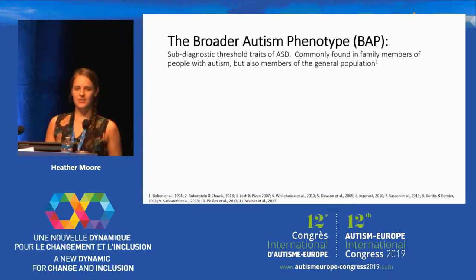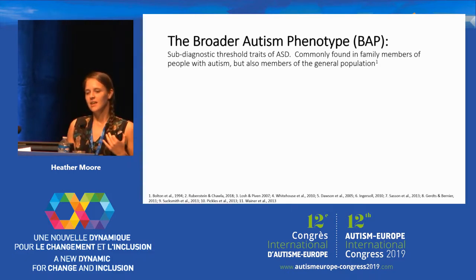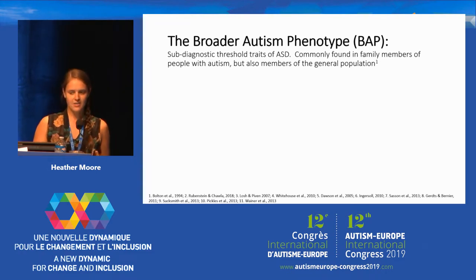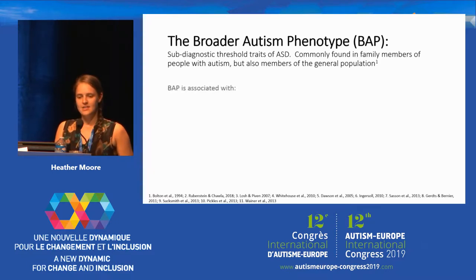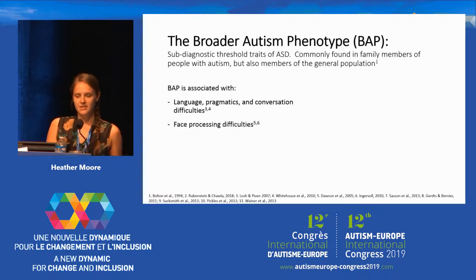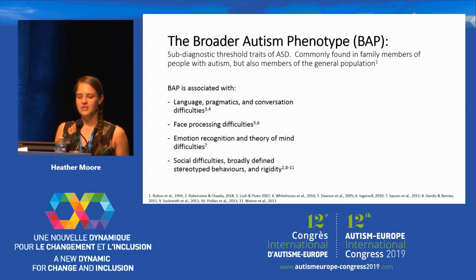The broad autism phenotype is those traits associated with autism that don't reach the threshold for diagnosis. It's commonly found in family members of people with autism, but also members of the general population, and is associated with a number of other difficulties, including language difficulties and conversation difficulties, face processing difficulties, emotion recognition difficulties, social difficulties, stereotype behaviors, and rigidity.